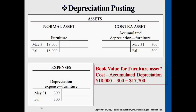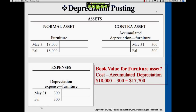The book value comes from these two accounts — it's already there at $17,700. Under the financial statements in chapter four, you'll see furniture listed first and then accumulated depreciation for furniture listed right next to it, showing both figures together on the balance sheet.